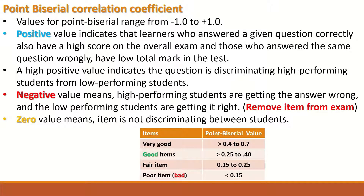According to the classification table, a point biserial value greater than 0.4 indicates a very good question. A value of 0.25 to 0.4 suggests a good item. A value of 0.15 to 0.25 indicates a fair item. Any question with a point biserial value less than 0.15 is considered a bad item that is worth modifying or omitting from the exam.